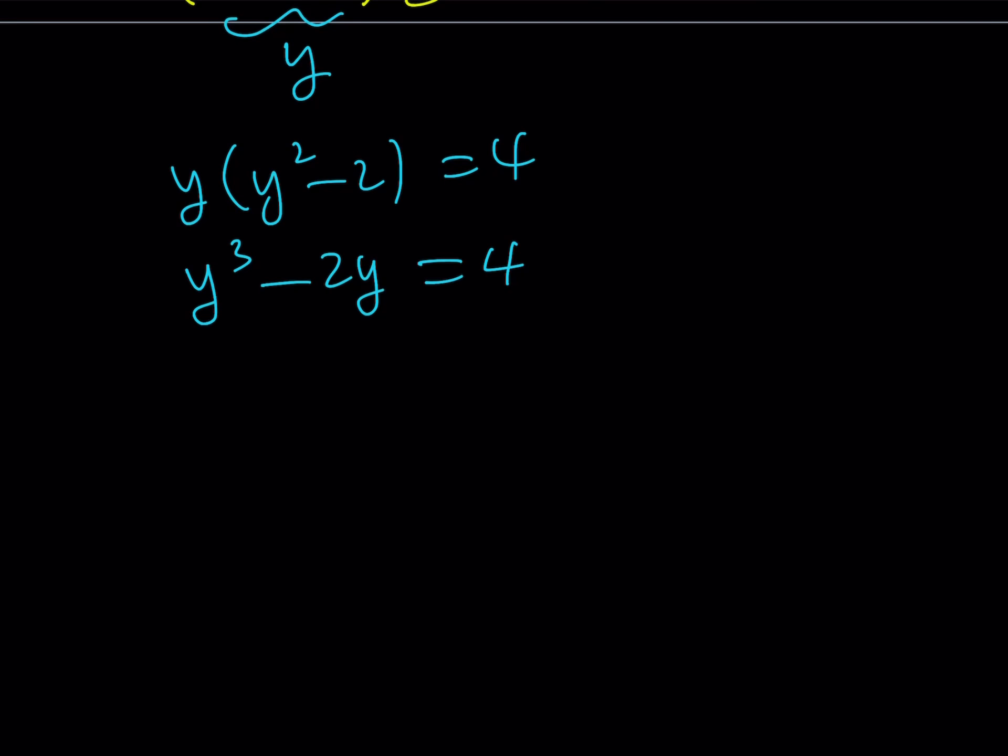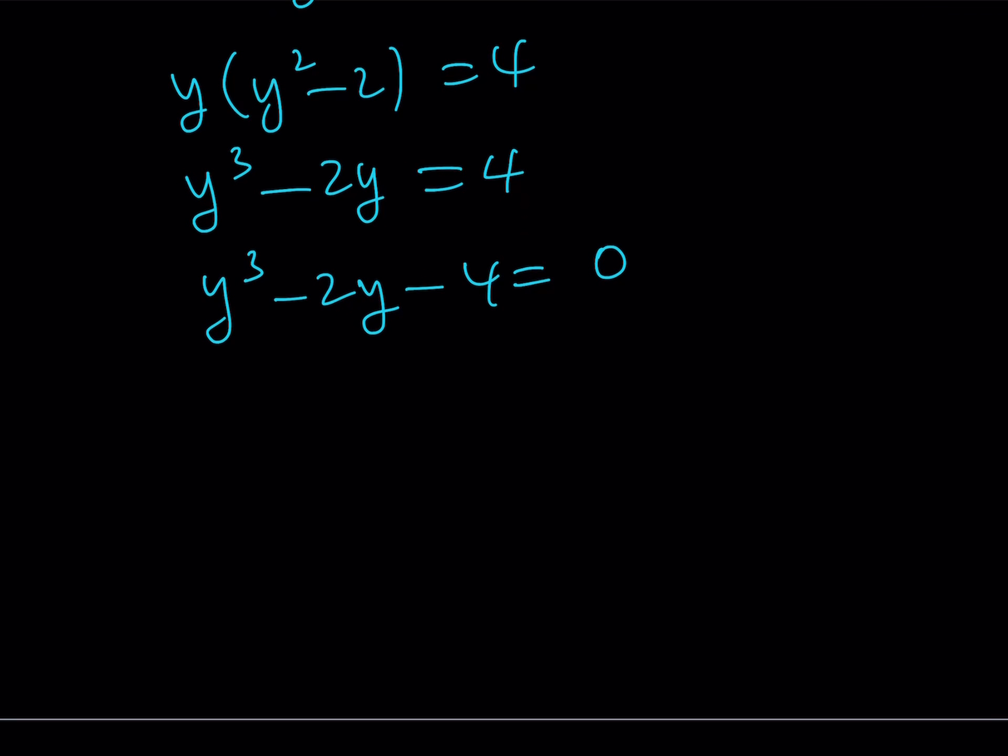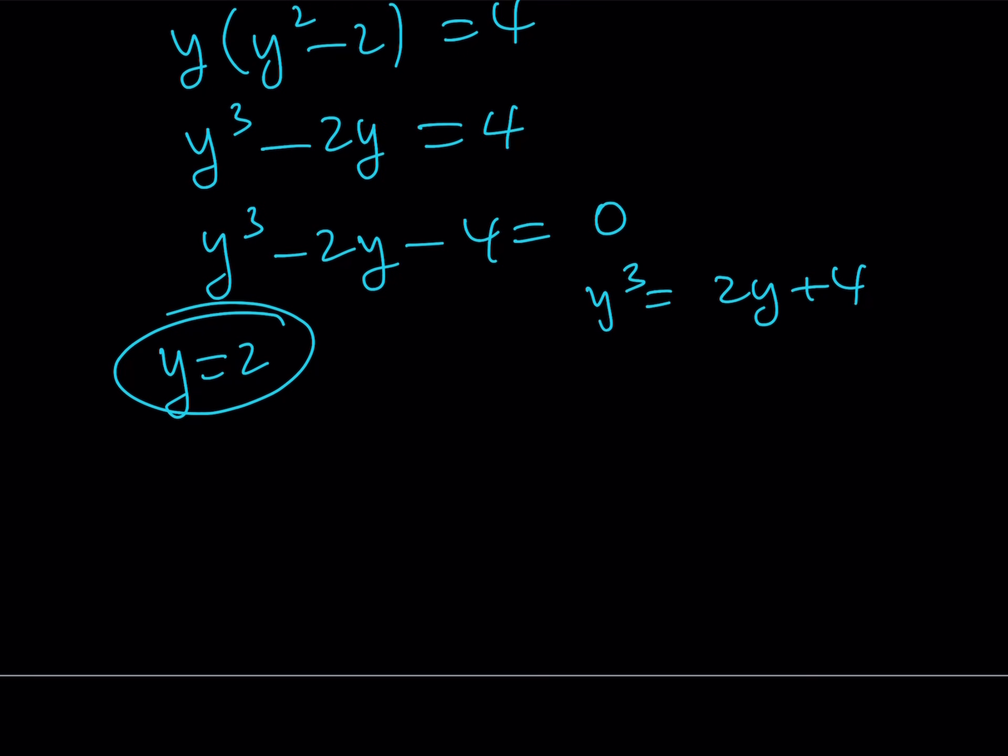And if you kind of think about what integer would work for this, you're looking at divisors of 4, and you don't really have a lot of possibilities. And if you just go ahead and test it, you're going to notice that y equals 2 is a solution. And it's probably easier to see if you write your equation like this, then you can plug it in on both sides, and you'll notice that y equals 2 actually works. Great.